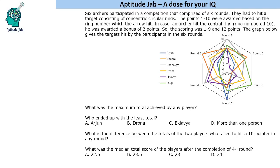Hello everyone, welcome to Aptitude Jab. This is a set based on radar chart. It says that there are six archers who participated in a competition which had six rounds, and they had to hit a target consisting of concentric circular rings. There were points 1 to 10 awarded on the basis of the ring number that they hit.